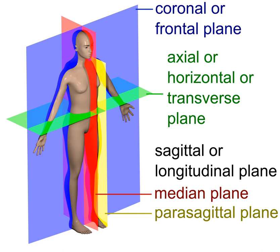Examples of sagittal planes include the median plane or mid-sagittal plane, terms sometimes used to describe the sagittal plane running through the midline. This plane cuts the body into halves, passing through midline structures such as the navel and spine. It is one of the planes which, combined with the umbilical plane, defines the four quadrants of the human abdomen.